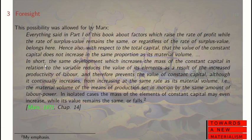This possibility was allowed for by Marx. He says: 'Everything said about factors which raise the rate of profit while the rate of surplus value remains the same belongs here — hence also that the value of constant capital does not increase in the same proportion as its material volume.' The same development which increases the mass of constant capital in relation to the variable reduces the value of its elements as a result of increased productivity of labour, and therefore prevents the value of constant capital from increasing at the same rate as its material volume. In isolated cases, the mass of elements of constant capital may even increase while its value remains the same or falls.